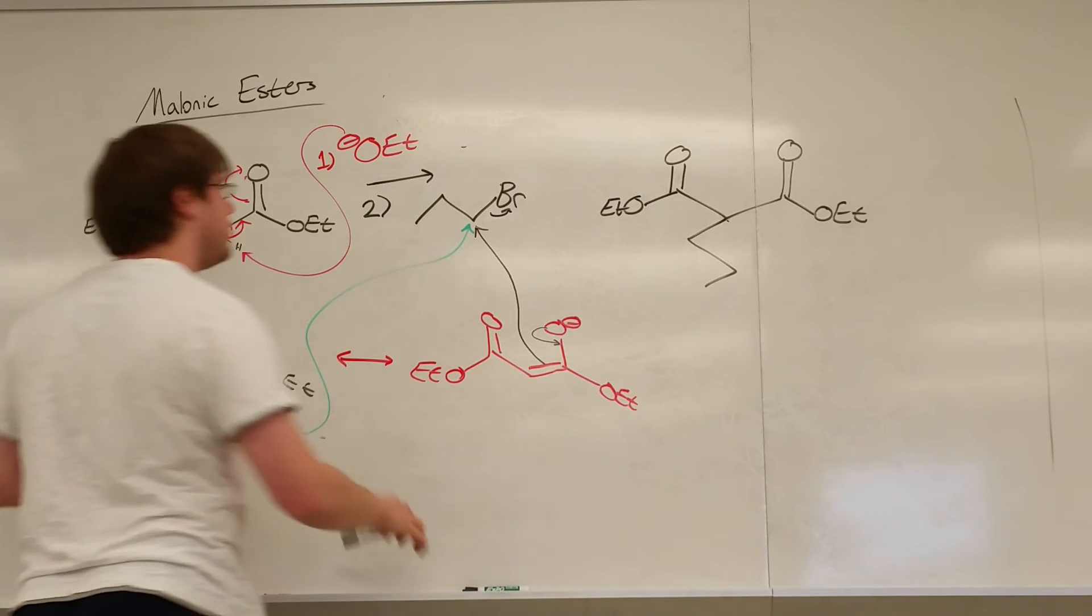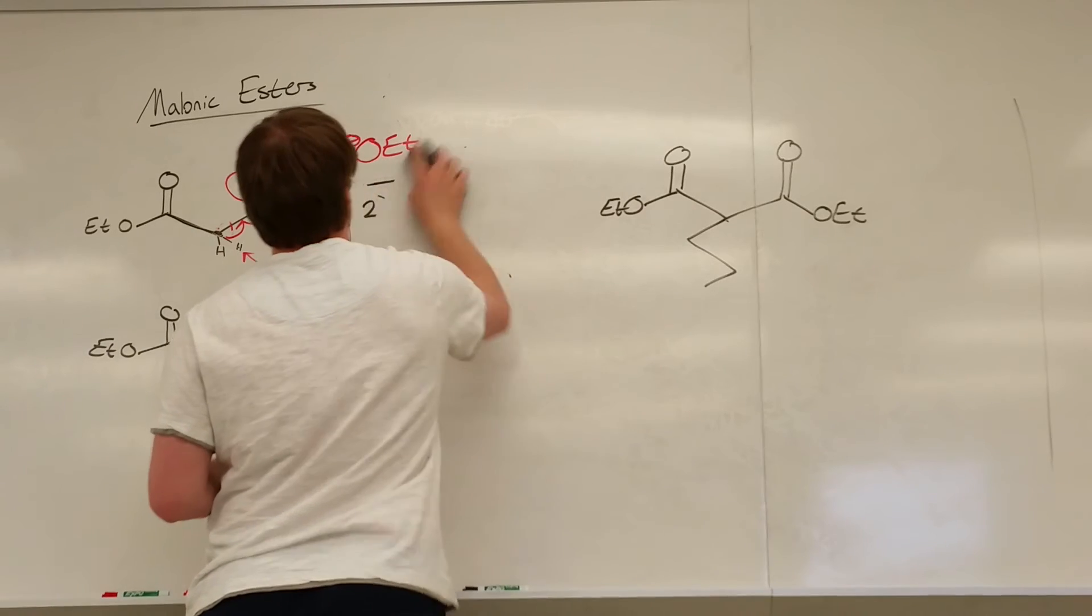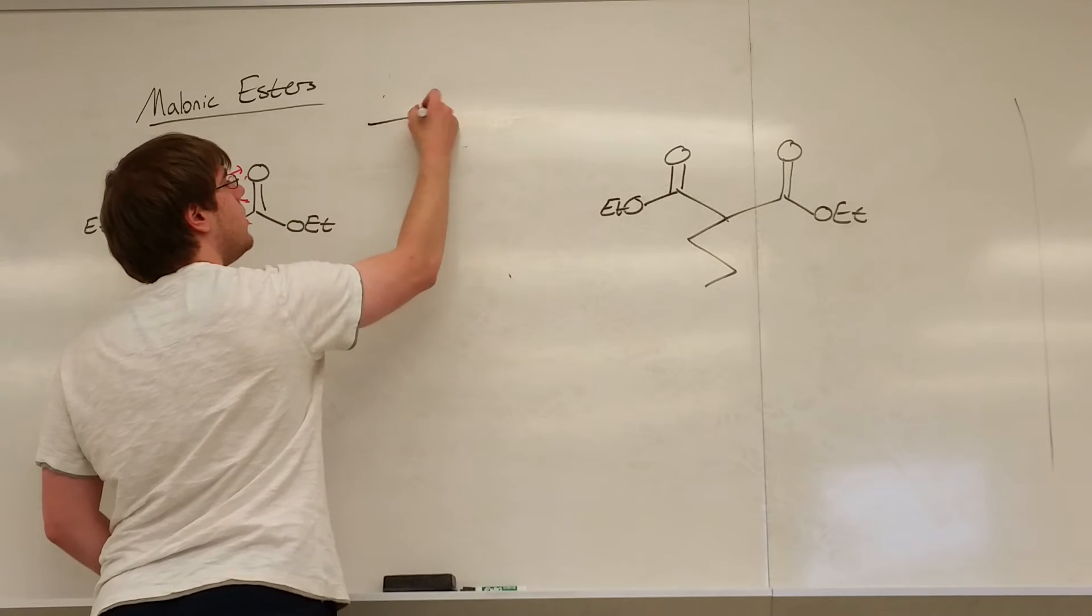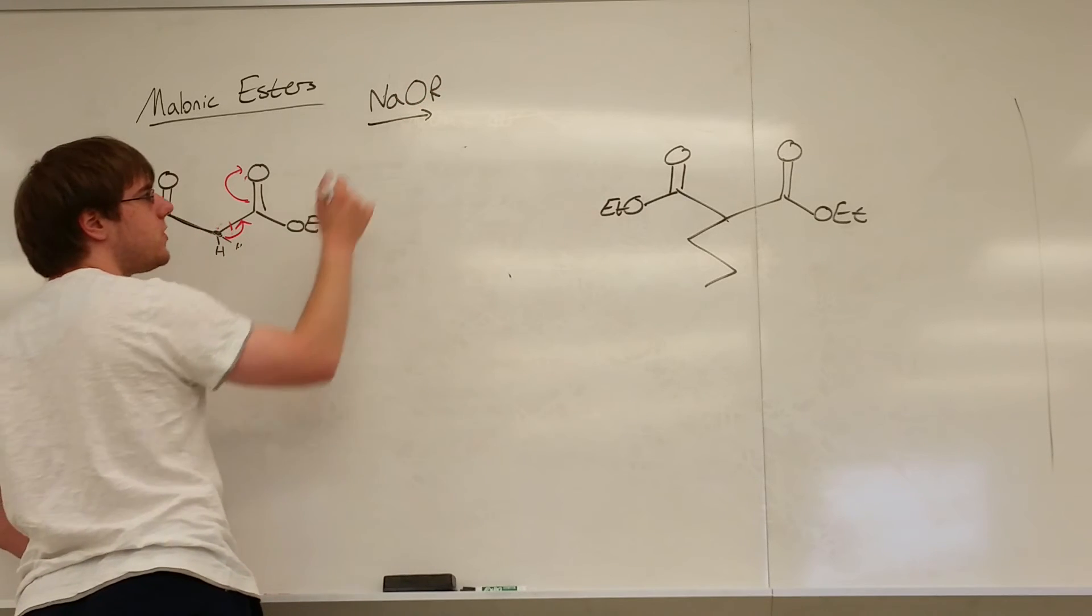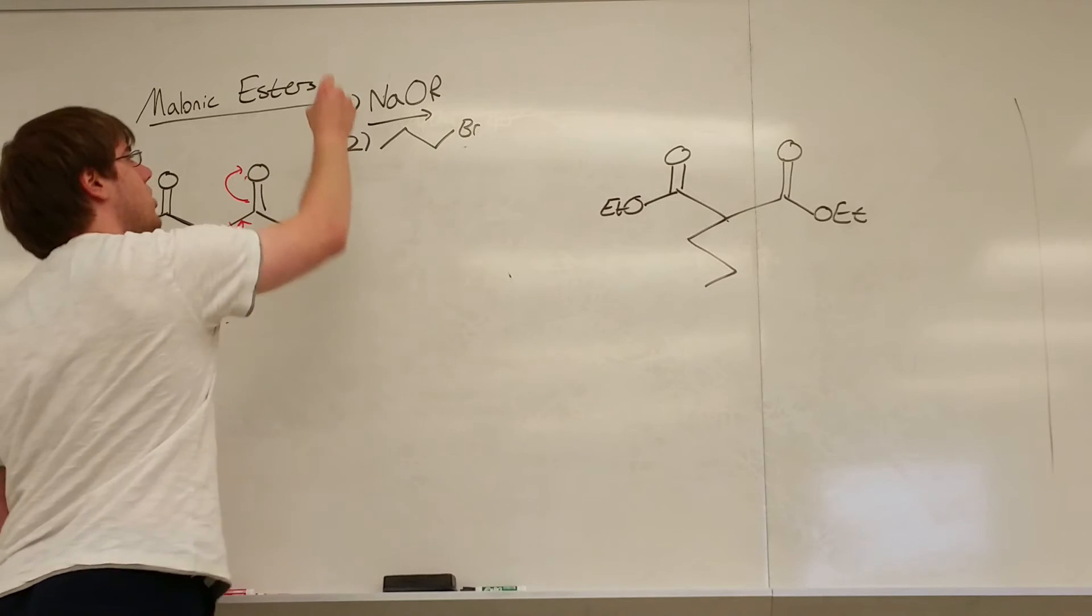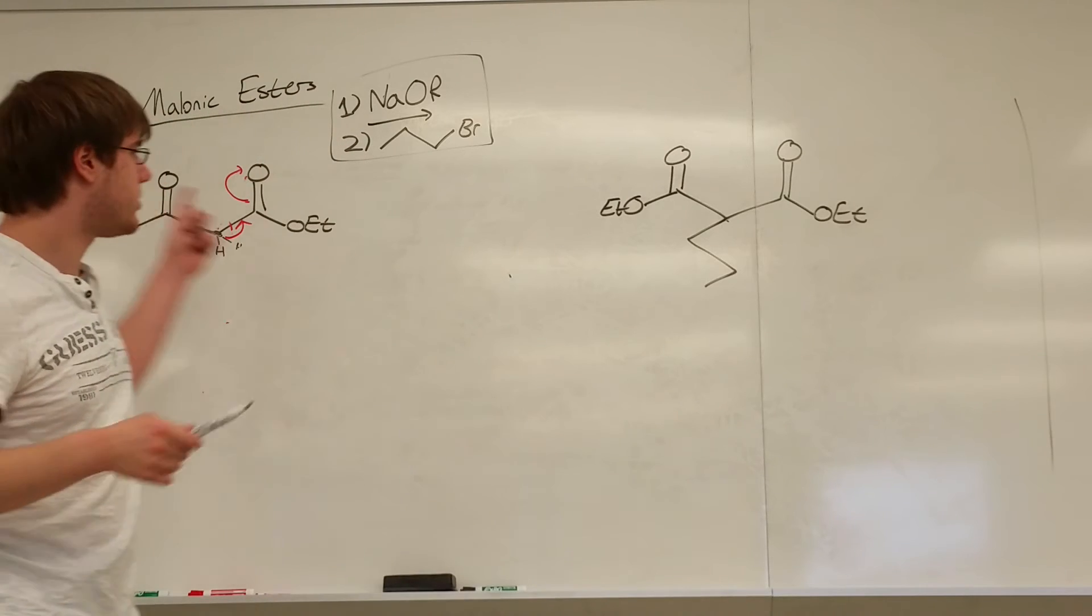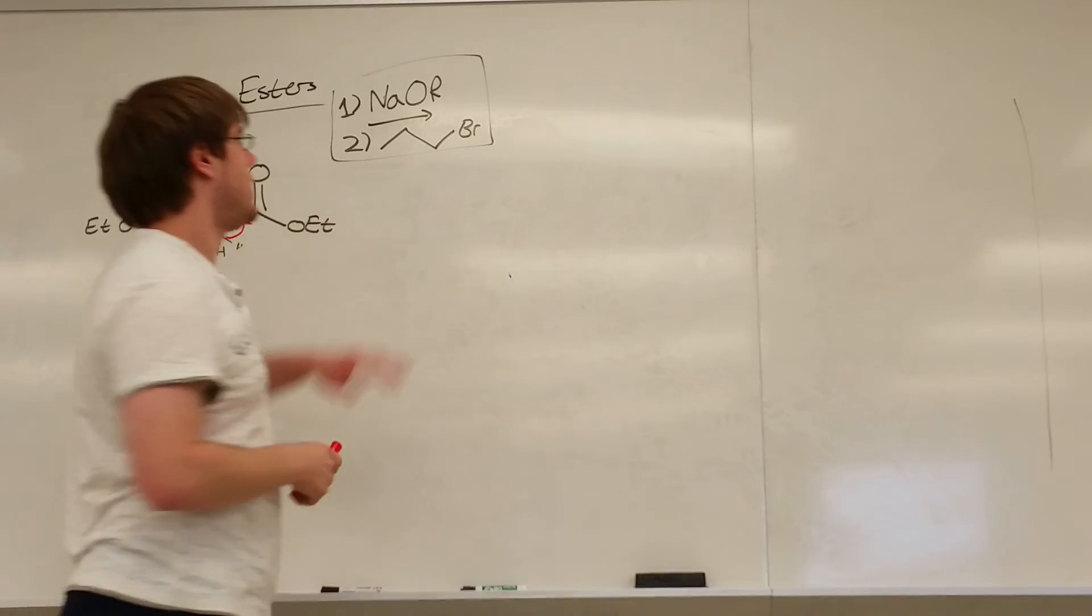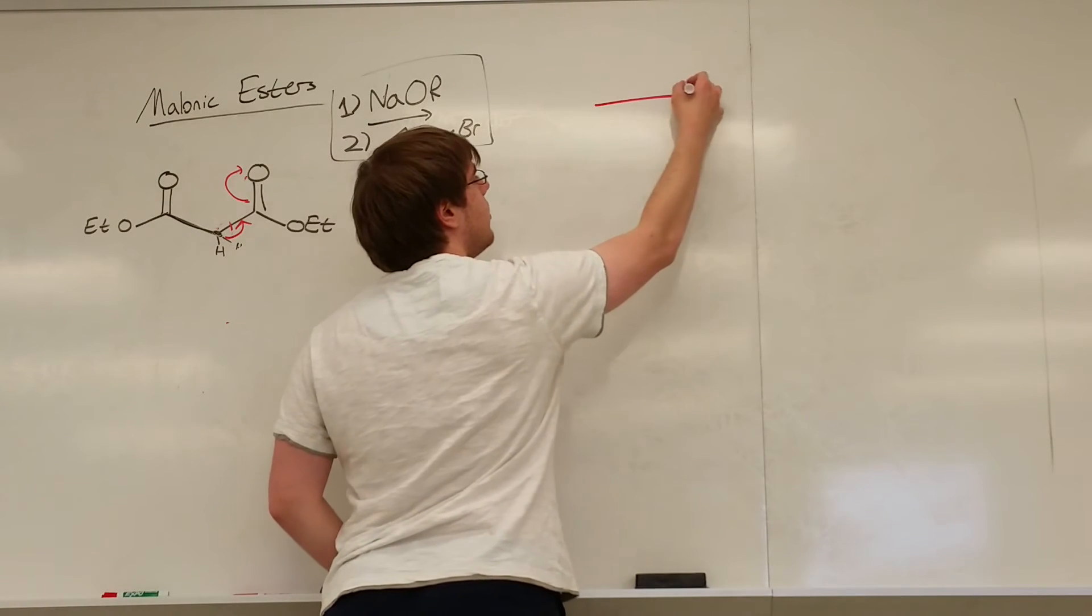Now there's a second step that generally follows the malonic ester synthesis. So there are two pairs of arrows you're going to see a lot when you're working with malonic ester. The first one we just discussed, the one where you see step one, NaOR, where the R group matches the R group of your ester. And that would be step one. And then step two would be some carbon chain with a leaving group on it. This is almost always paired together when you're working with malonic ester synthesis. So if you ever see this on an exam, generally it's going to be involving something like this.